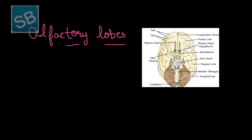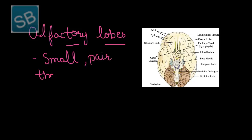This figure depicts the vertical section of the brain. As seen from the figure, the olfactory bulbs, that is, olfactory lobes, occur in pairs which are small, thin, and transparent in nature.